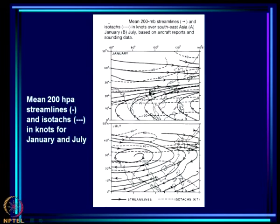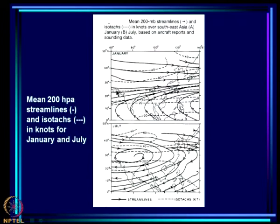If we look at the mean 200 millibar streamlines in the upper troposphere for January, you will see that at 200 mb the winds are westerly - they flow directly over the Tibetan plateau which is lower than the 200 mb level. What happens during the monsoon is that the westerly flow is entirely to the north of the Tibetan region, and to the south we have easterly flow.